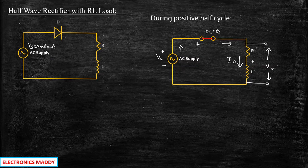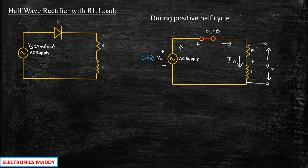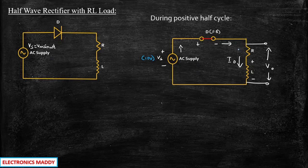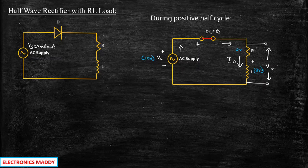Now we need to make an assumption. Let us say we are supplying 10V and we choose the resistor value such that whatever 10V is supplied at some point in time should be available at the load terminals, because there is no other elements between them — the diode is short-circuited. So in the 10V that we are supplying, 2V is dropped across the resistive load and the remaining 8V is available across the inductor. So the inductor slowly starts charging and reaches a maximum value of 8V.